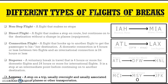A layover is a stop, usually overnight, and is usually associated with a change of planes. On a stopover we only have four hours for domestic and 24 hours for international, and a change of planes is not associated with a stopover — we only change planes during a layover, usually overnight. So the different types of flight breaks are: non-stop, direct flight, connecting flight, stopover, and layover.